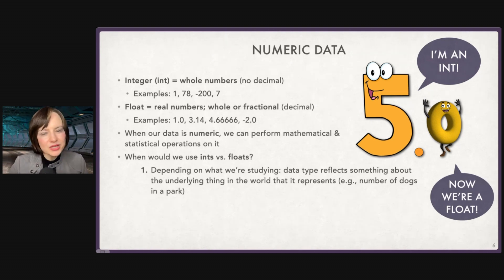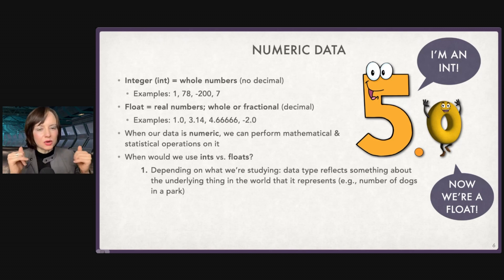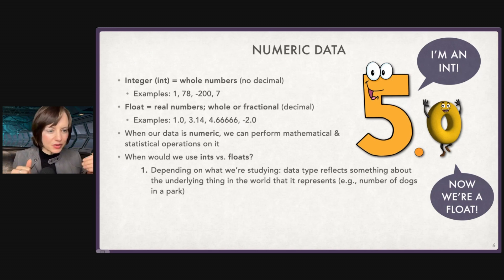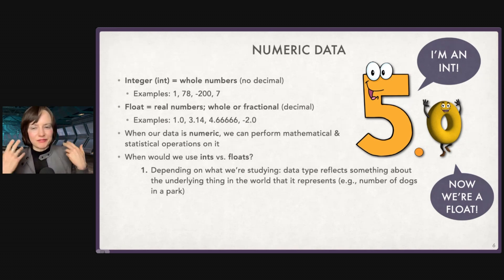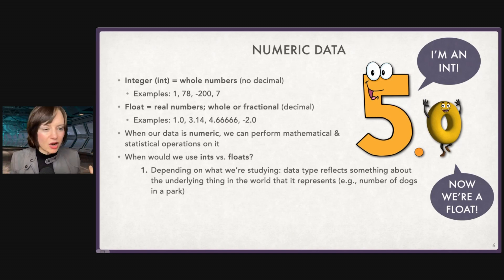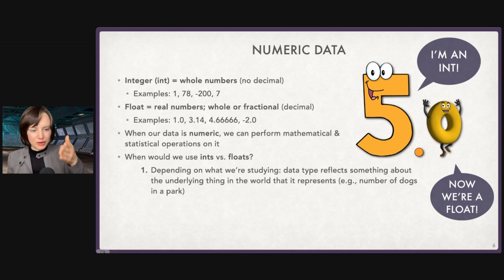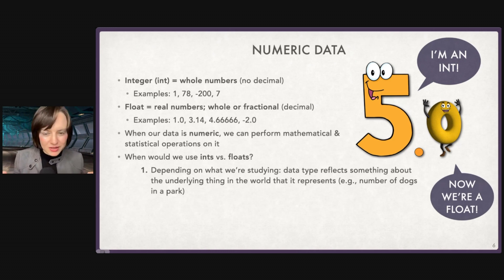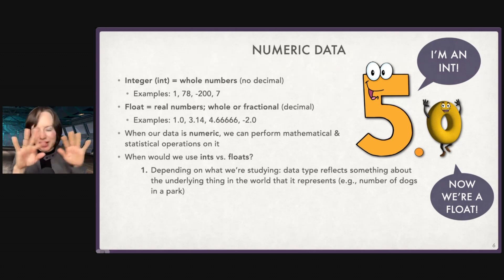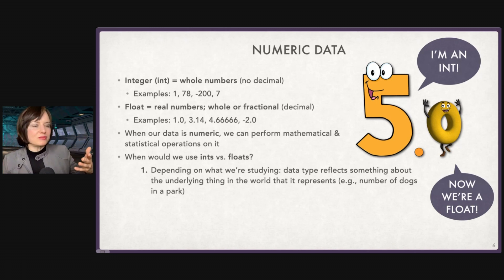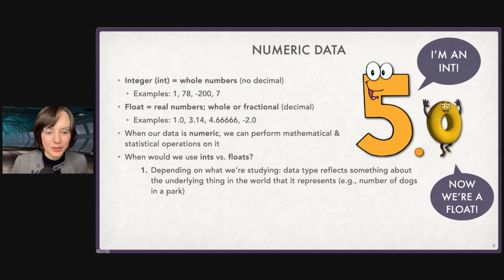One factor is what we're studying. If we're studying something that only comes in whole amounts, we'll record it as an int — not just because ints take up less memory, but because it reflects something about the world. So if I'm recording the number of cars on the highway, I'll probably store it as an int, because you'd have one, two, three, four, five — you wouldn't have 5.5 cars. You want to choose the one that reflects the underlying thing, and that's related to variable type as well.